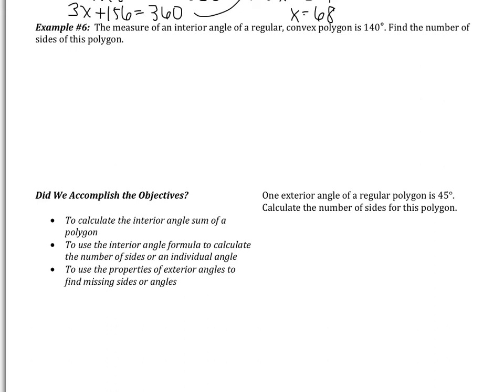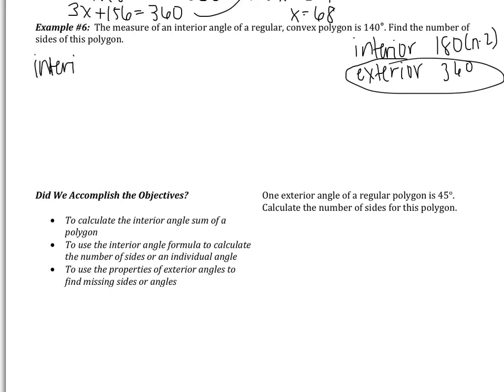Example number six, it says the measure of an interior angle of a regular convex polygon is 140 degrees. Find the number of sides of this polygon. So there's two ways to think about a problem like this, in terms of interior angles and in terms of exterior angles. Interior angles have the difficult formula or the more difficult formula of 180 multiplied by n minus 2. Exterior angles sum to be 360 no matter what. Because of this fact, we're going to use the exterior angles instead. So it says the measure of an interior angle is 140.